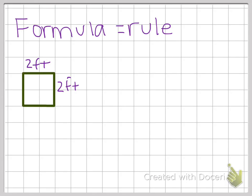We can write a formula to show how to find the perimeter of a square and the perimeter of a rectangle. A formula is a rule.